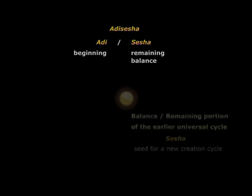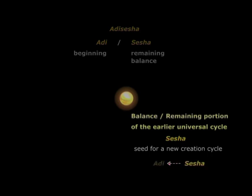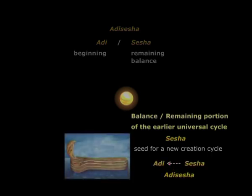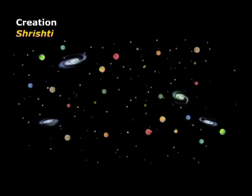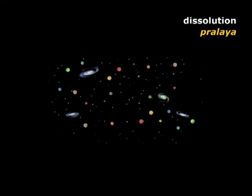To understand the enigma of Adi Sesha, let us go to the root of the word. Adi means beginning and Sesha means remnant. Thus Adi Sesha is a remnant of an earlier cycle of creation. Adi Sesha is always represented as a coiled serpent with five heads, representing the endless cycles of creation and dissolution by its ability to uncoil and coil itself back.